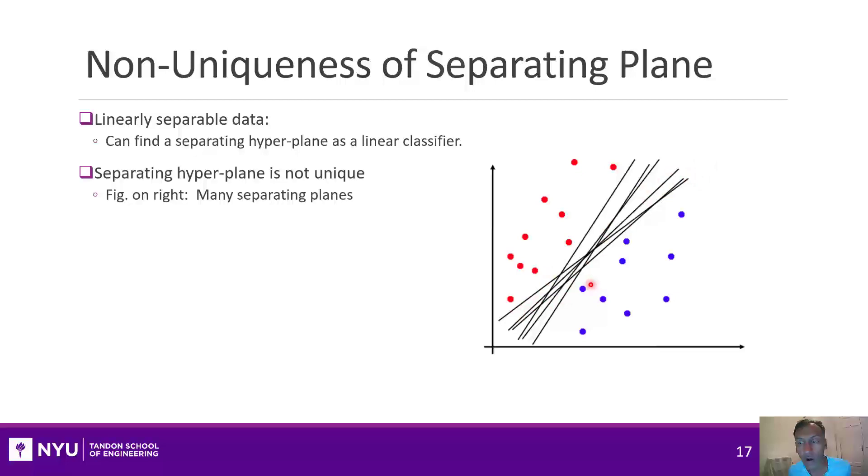Now, obviously, in most cases, the separating hyperplane is not unique. For example, in this case, you can draw many lines that split these. And so the question is, if you have data that is separable, how do you determine which one is optimal?